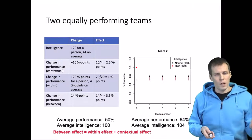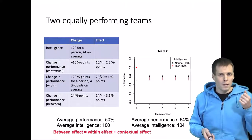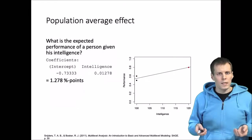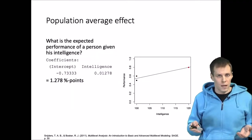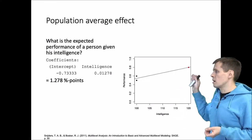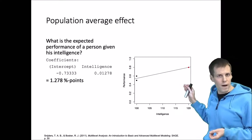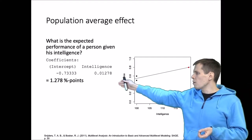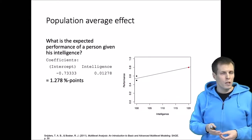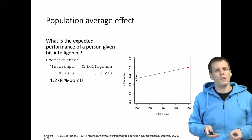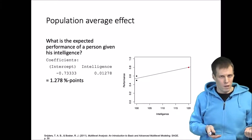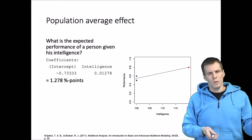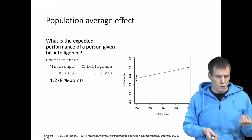Now this shows the difference between the between effect, the within effect, and the contextual effect. How about the population average effect? The population average effect tells us basically what is the expected performance of an individual given his or her intelligence, and we get it by running a regression analysis through the data. Intelligence varies between 100 (nine people) and 120 (one person), and the regression gives us 1.27 percentage points. So that's not the within effect, not the between effect, and not the contextual effect — the within effect was 1 percentage point, the between effect was 3.5, and the contextual effect was 2.5.